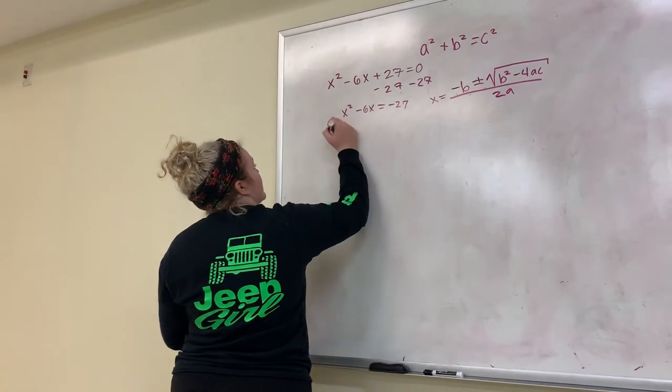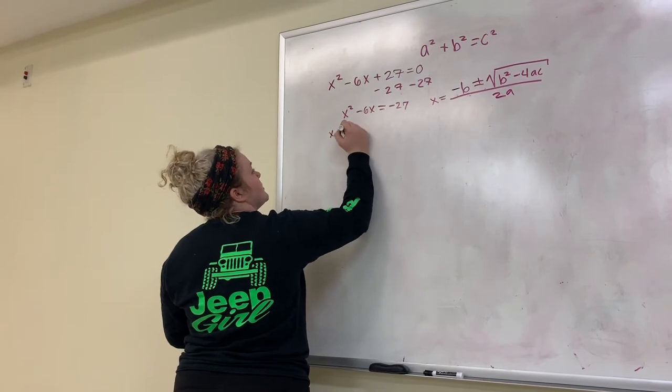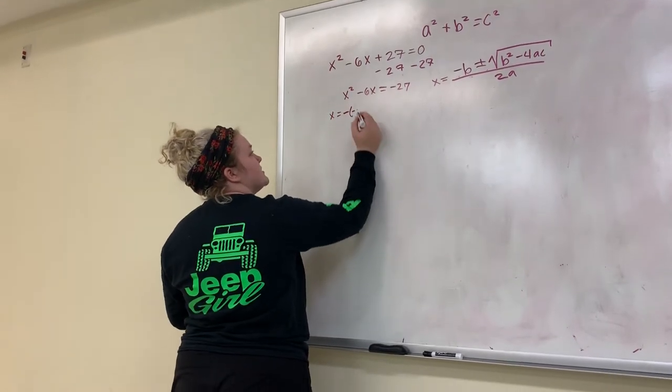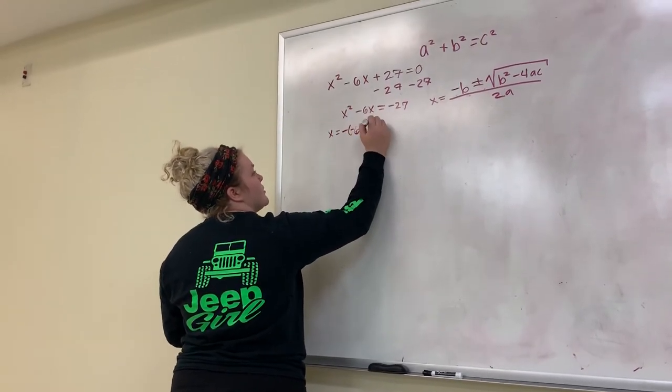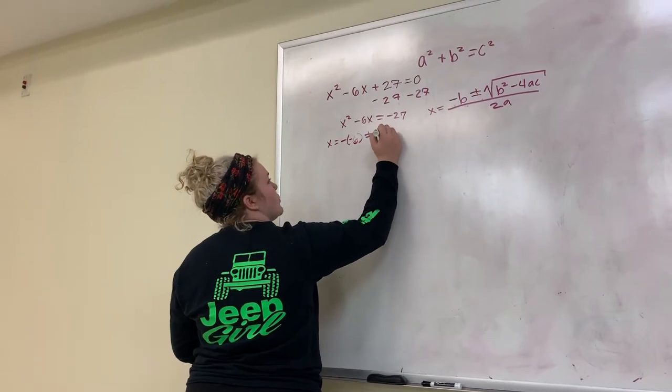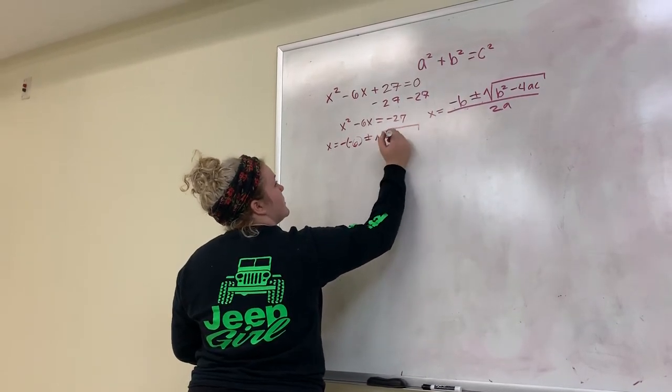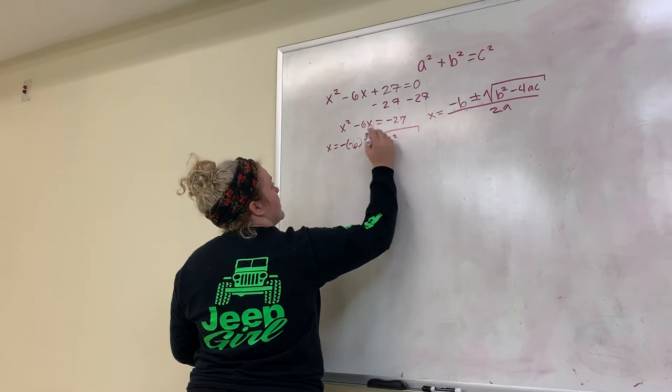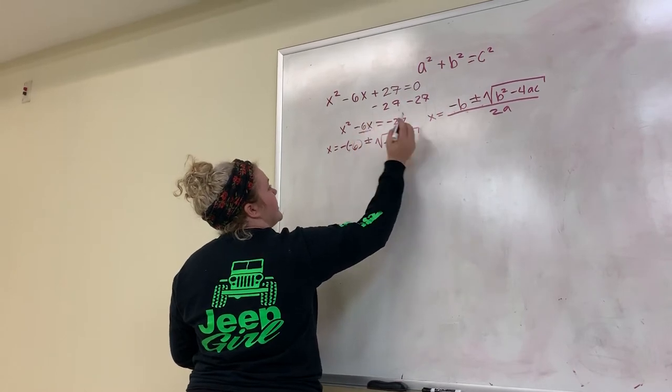So to start off, we're going to be doing x equals negative, and in parentheses negative 6, plus or minus square root of negative 6 squared. I'm getting the 6 from this right here.